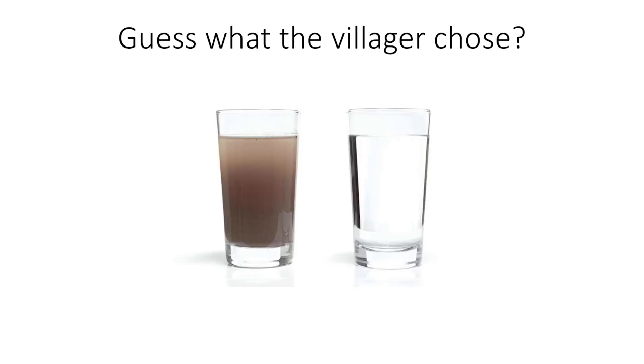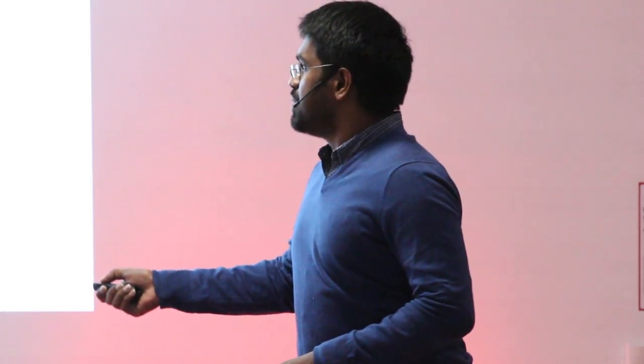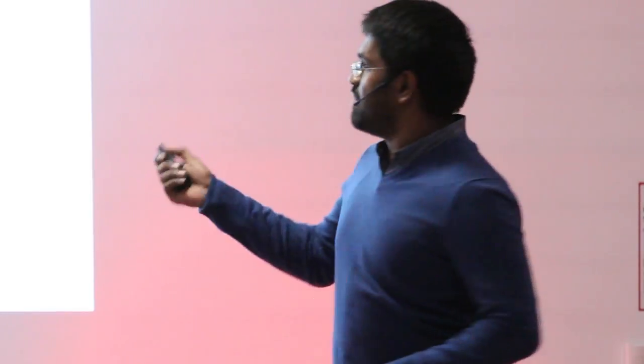So coming back to the question again. Guess which glass that the villager chose after working for 18 months? The glass that the villager chose was the grey glass, the glass that was cloudy and murky. And to them, it's because they have never seen a glass of clear water in their life. And to them, this was dirty. So it was a matter of perception.